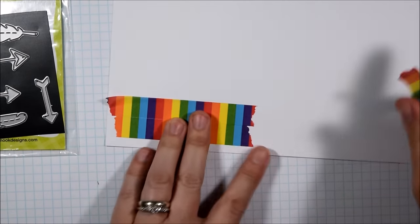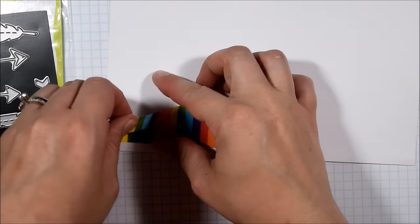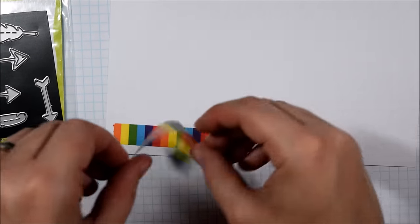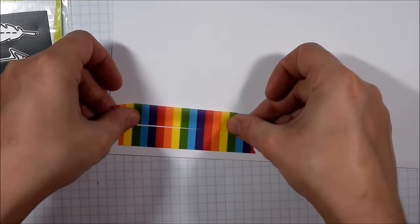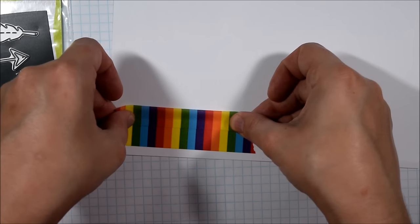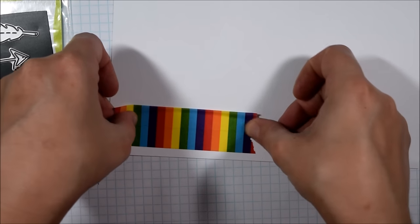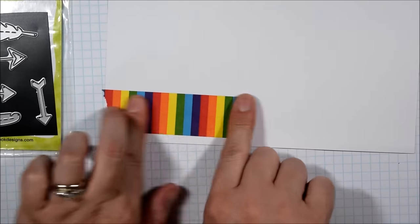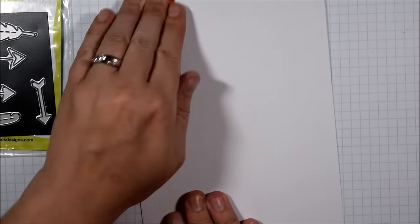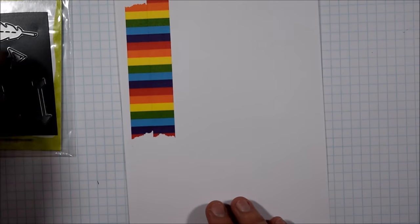I had been experimenting with different ways to put washi tape on cards and I realized I could line up the tape and create a piece of rainbow paper with the stripes. So I'm going to lay the rainbow washi tape across this piece of white cardstock and I will line up all of the colors so it looks like one continuous line even though it's strips of tape.